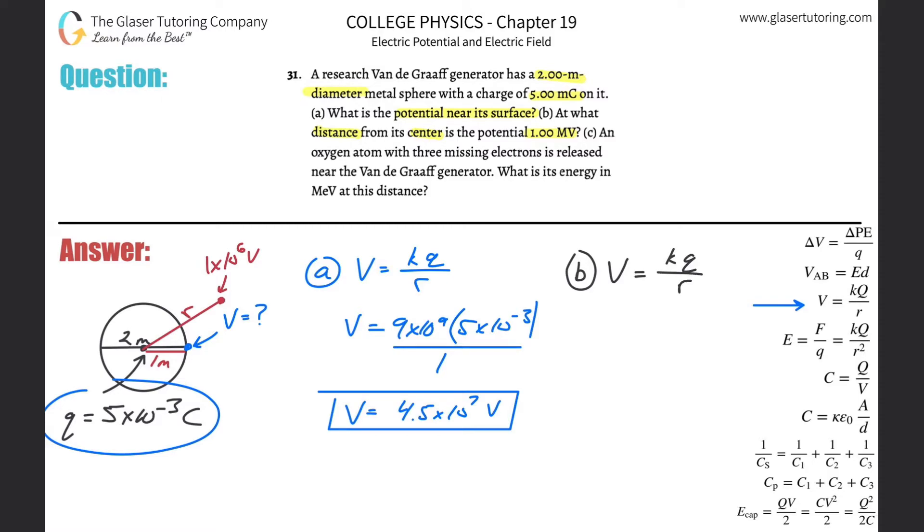Why don't we just solve this for R right away? All you got to do is just do a simple cross multiplication. There it is. Here's the formula: 9 times 10 to the 9th times the charge, which is 5 times 10 to the minus 3.